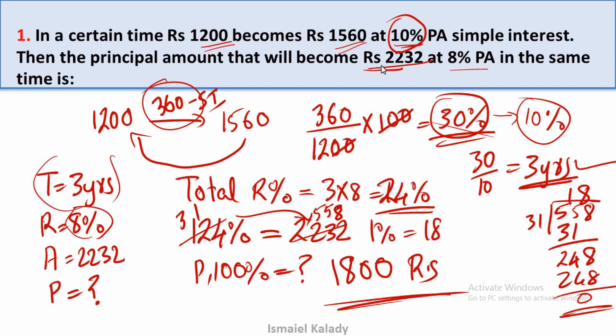The second condition is when we get the rate of interest and the amount, we find the principal using those values.